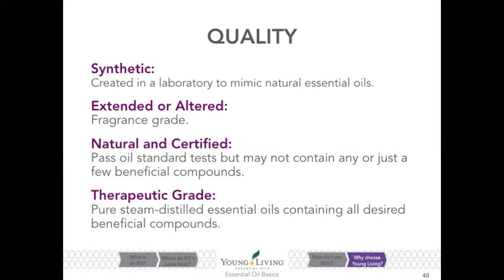There are different grades of essential oils in the industry. Synthetic oils are created in a laboratory to mimic natural essential oils — synthetic fragrance oils are primarily made from petrochemicals. A 1986 report by the National Academy of Sciences reported that 95% of the chemicals used in synthetic fragrances are derived from petroleum and include benzene derivatives, aldehydes, and many other known toxins. Extended or altered fragrance-grade oils, also known as fragrance oils, contain dilutants — cutting agents — that reduce the strength. A common dilutant is DPG, dipropylene glycol.